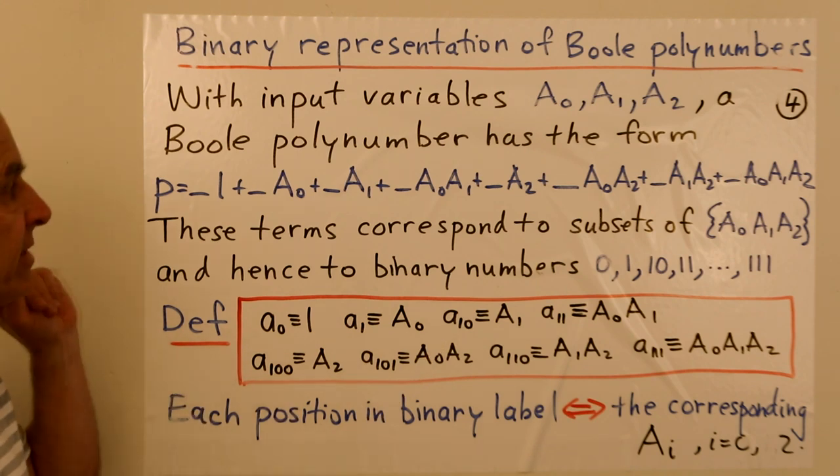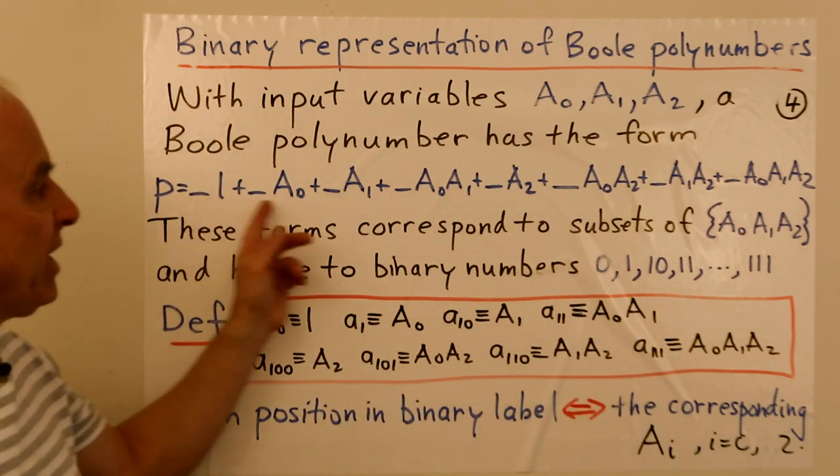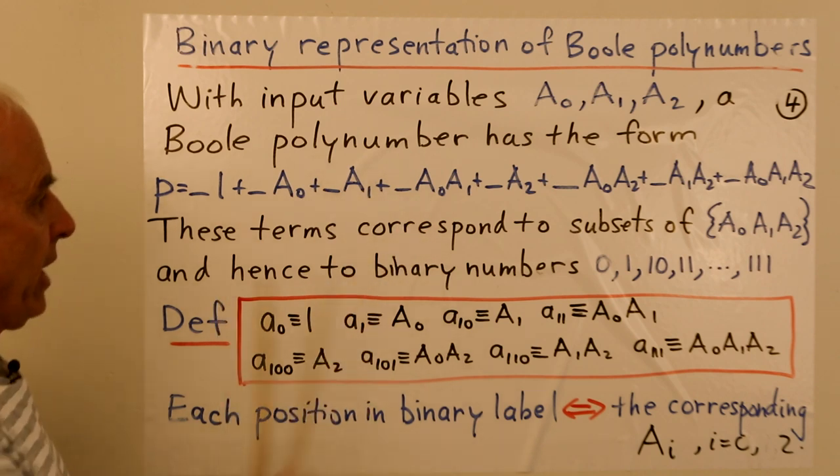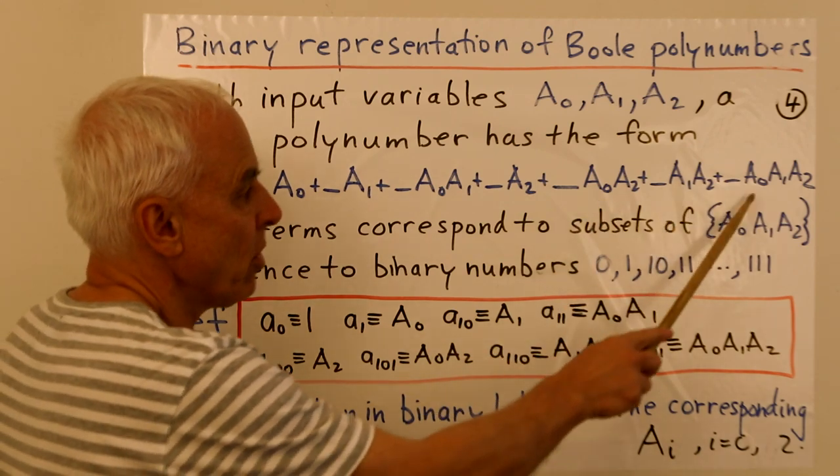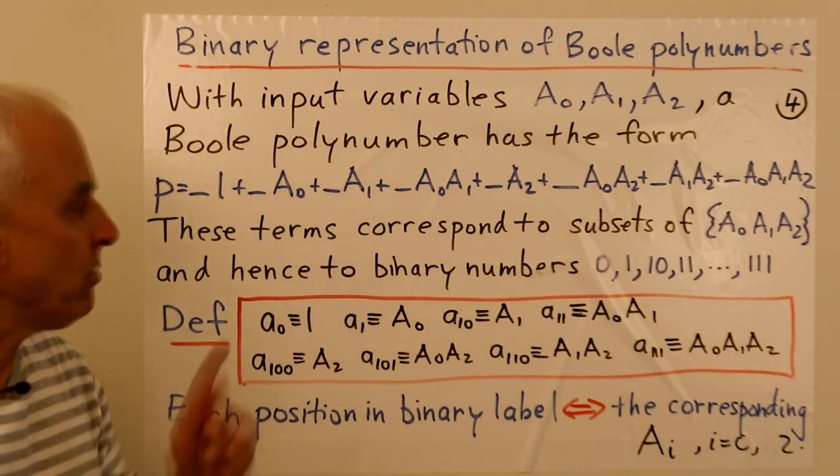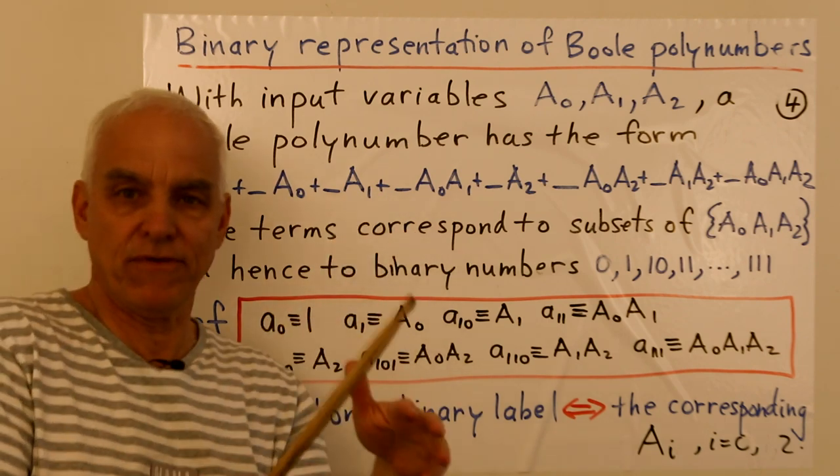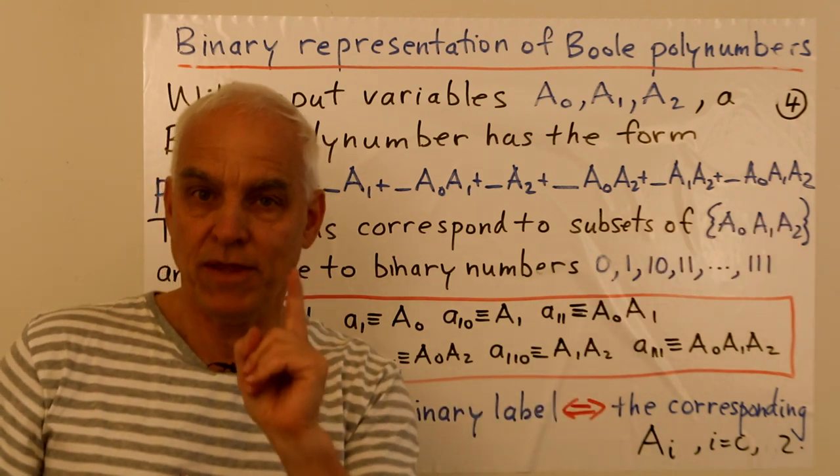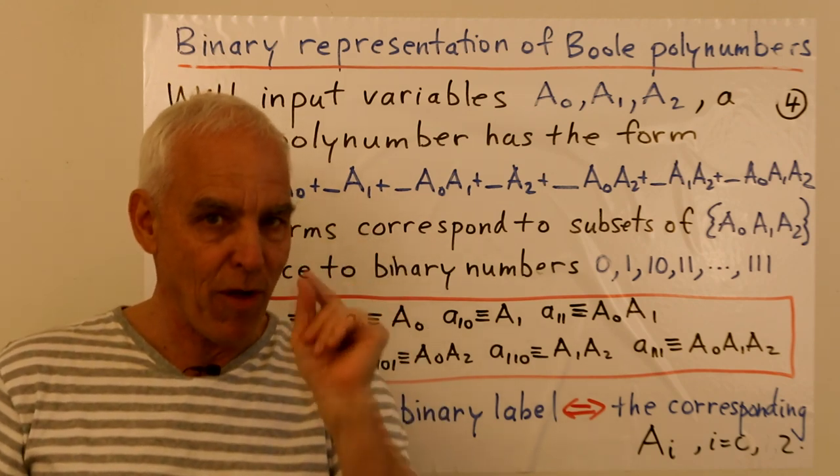And now let's have a look at the Boole polynumber side of things and impose a binary labeling for that. So we're still going to be thinking of having three input variables, A0, A1, A2. In that case, a general Boole polynumber in this context is an expression consisting of multiples, either zero or one of these eight various possibilities. We have a 1, A0, A1, or A2 over here, or A0 A1, or A0 A2, or A1 A2, or A0 A1 A2. And you might wonder why has he put the A2 on this side? Usually we would write A0 plus A1 plus A2, the linear terms first, and then the quadratic terms, and then the cubic terms. We're purposefully not doing that here.